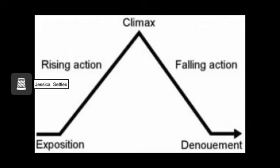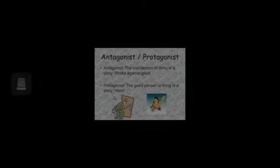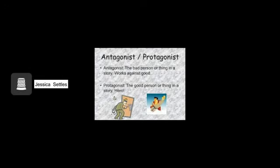Dramatic structure is the structure of a play. This chart represents the usual structure of a play. The protagonist is the main character, or the good person, in the story. The antagonist is working against the protagonist and is causing some sort of conflict. An example of a protagonist and antagonist would be Batman and the Joker.